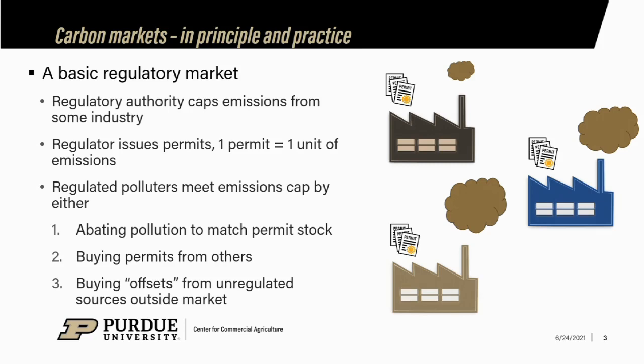If one firm finds it very cheap to abate its emissions, it can scale back and sell its extra permits to other polluters who would pay up to what it would have cost them to reduce the carbon themselves. The bottom firms end up polluting more than before, but collectively we're still meeting the cap — we've just changed the allocation of who's doing the polluting. From a societal perspective, you've met the objective of reducing carbon emissions, even though individual firms might not be reducing their own.